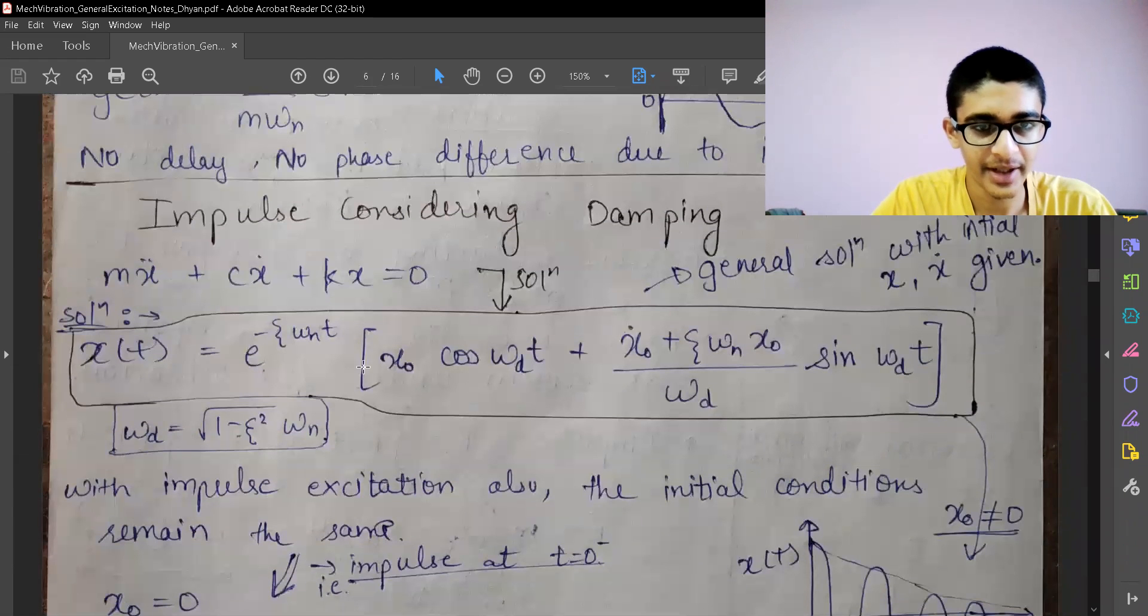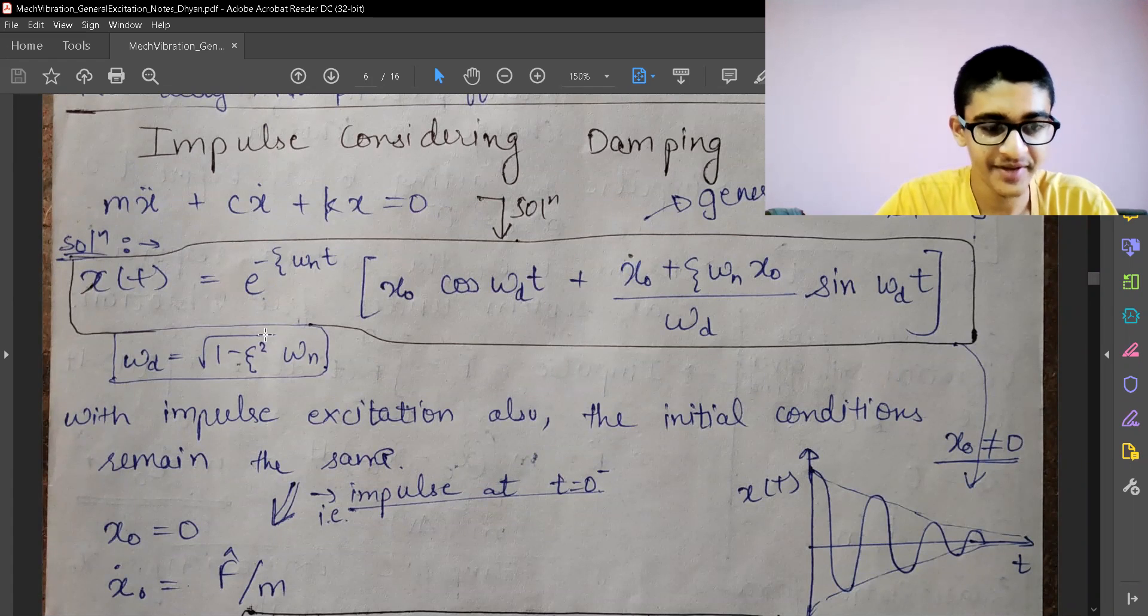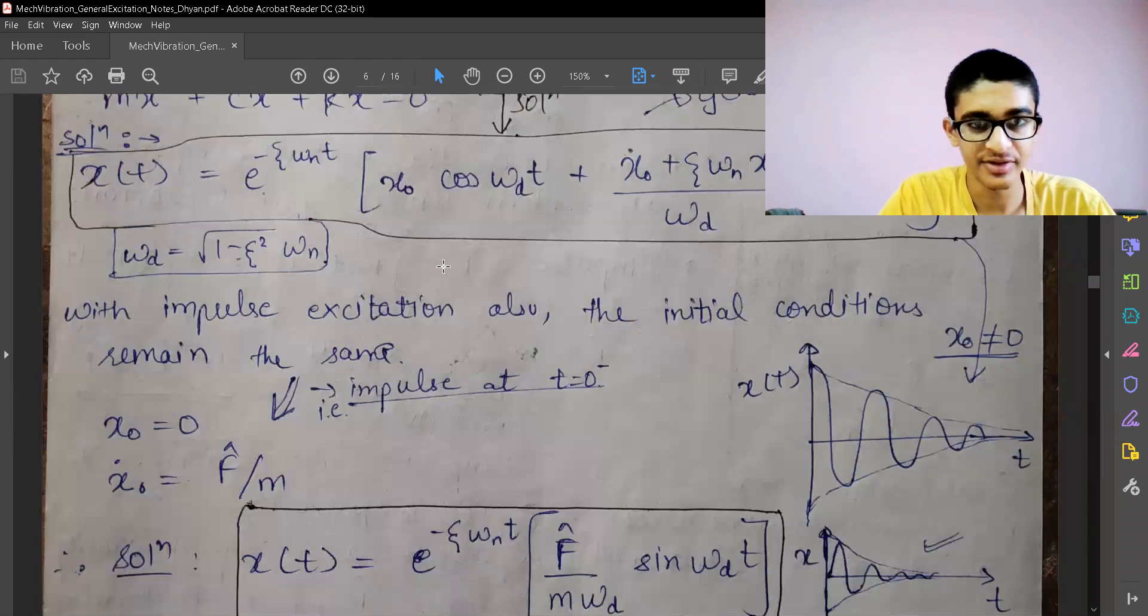These were the impulses which were applied at time exactly t equals 0 or just before time t equals 0. After time t equals 0, we had no disturbance to the system. It was reciprocating with the things which were related to impulse which was applied before t equals 0.